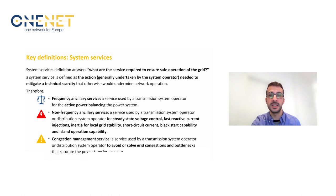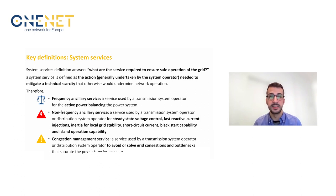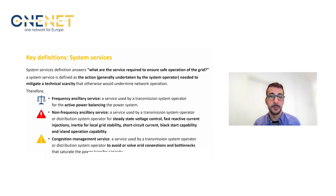Before starting, let's provide some key definitions that have been fundamental for developing the OneNet activities. First of all, system services. System services are defined to answer the question: what are the services required to ensure the safe operation of the grid? A system service is defined as the action generally undertaken by the system operator needed to mitigate technical scarcities that would otherwise undermine the network operation.